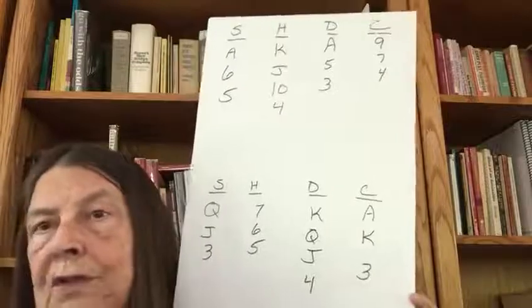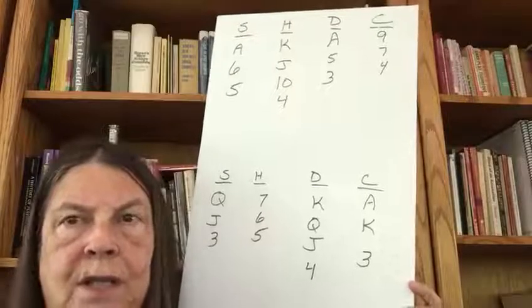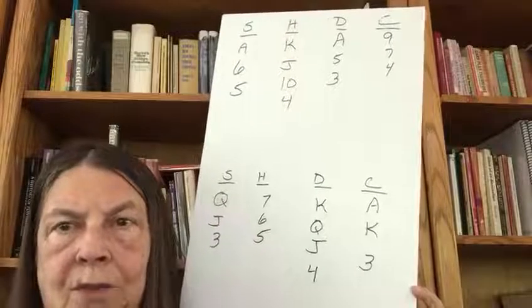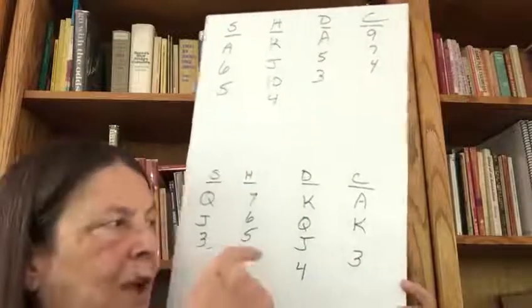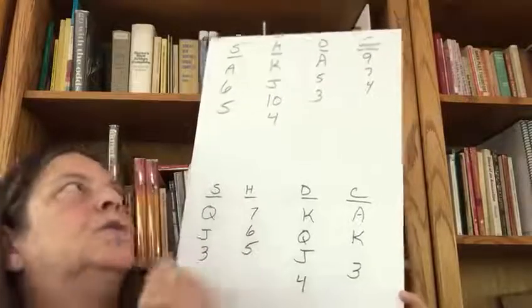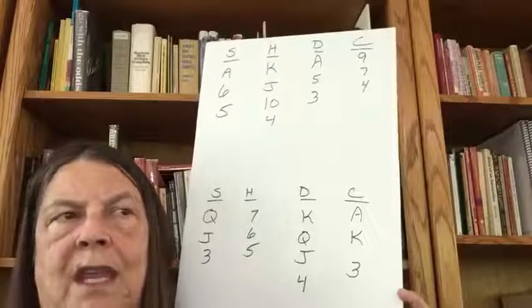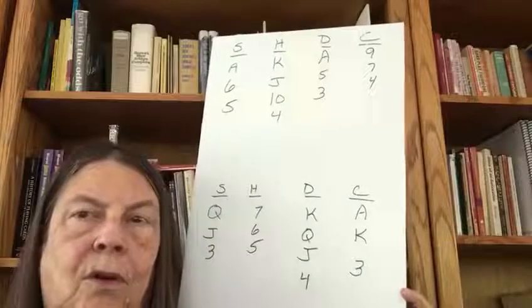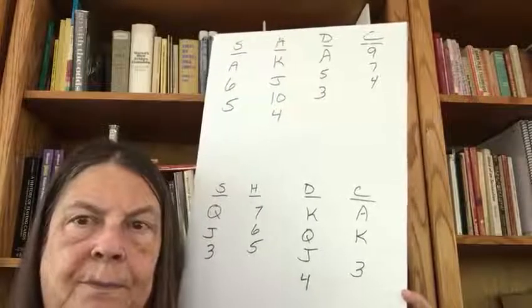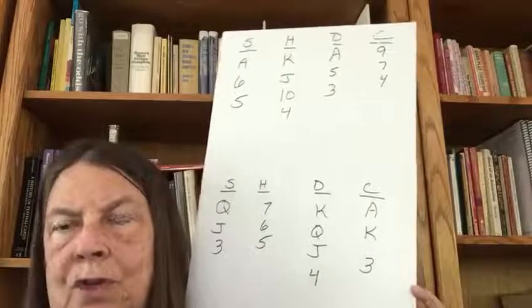Now, if that works - if either the ten wins or the ten forces the ace - what are we going to need to do in order to get two heart tricks? Well, now the king would be a trick if the ace had won. But how do we get another trick? We have to come back to this hand again, and we have to lead another heart towards the king-jack, so that if they play the queen, we win the king and our jack is good. Or, if they don't play the queen, we play the jack, the jack wins, and our king is good.